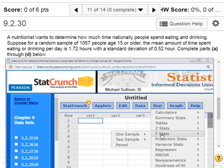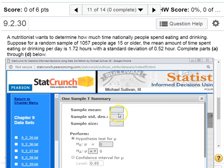And we have the summary data from our sample. Our sample mean was 1.72 hours, and our sample standard deviation was 0.52. Our sample size is 1057.